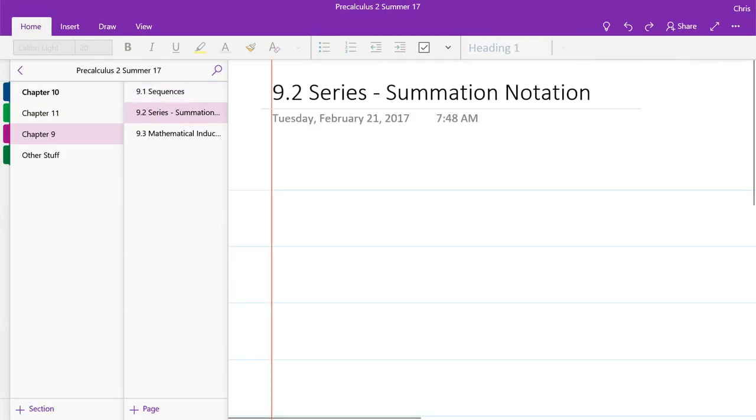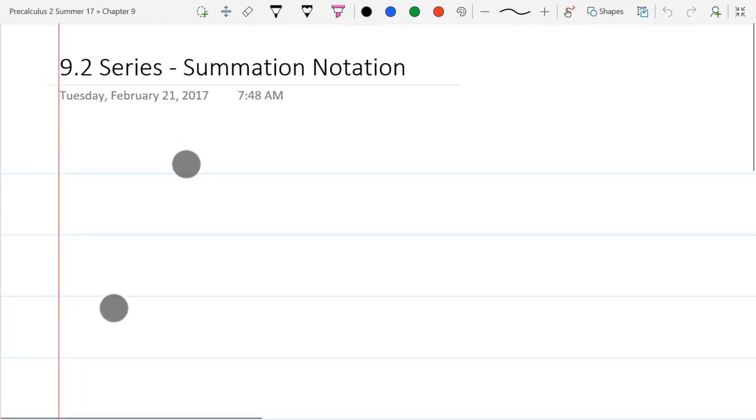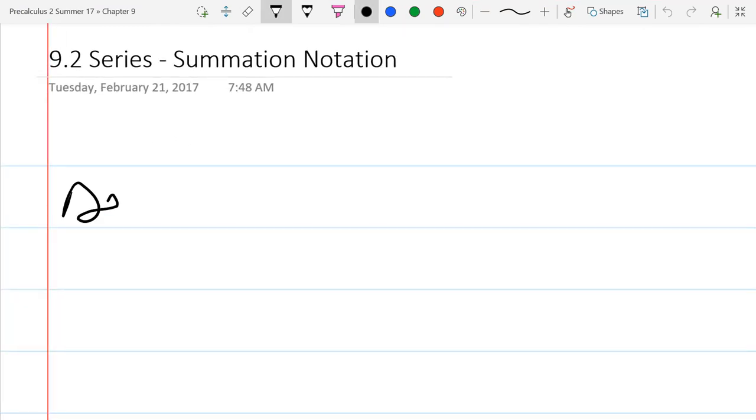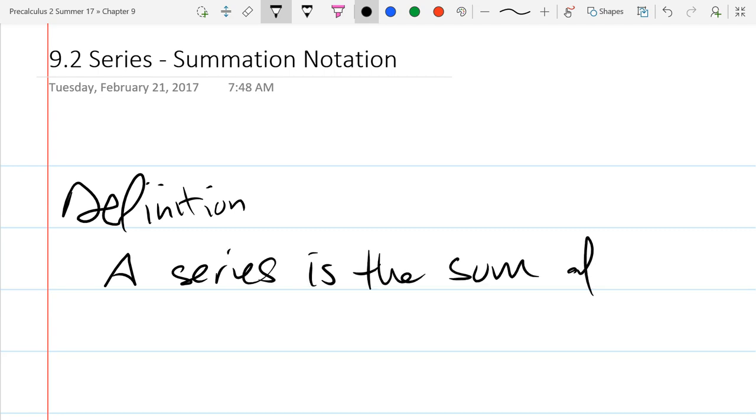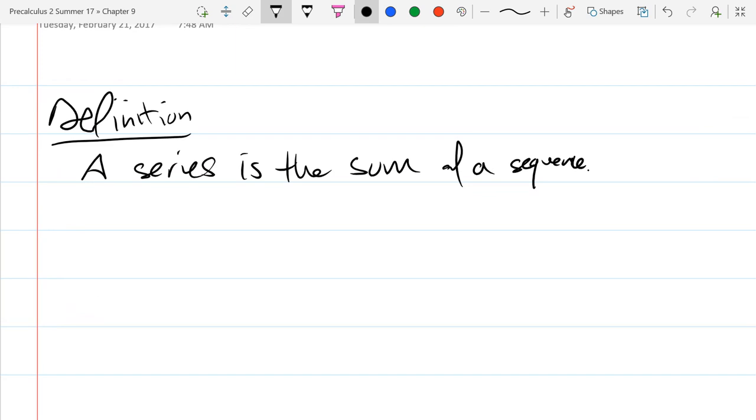So after sequences we have series and summation notation. We'll start out with definition. A series is the sum of a sequence. That's what the definition is. What was the sequence? The sequence was an ordered list of numbers and a series is if you added all them together, what would you get?